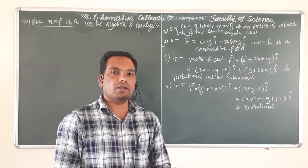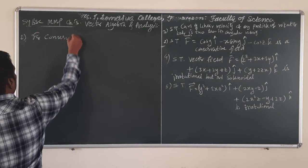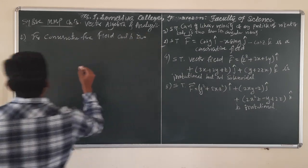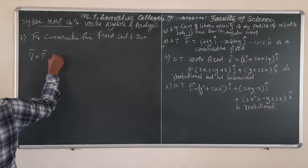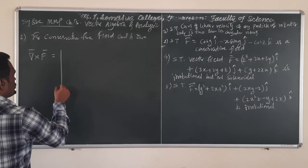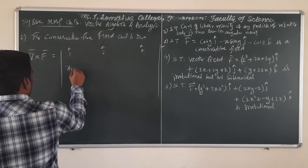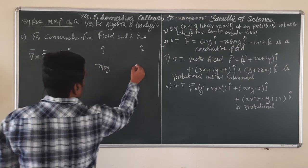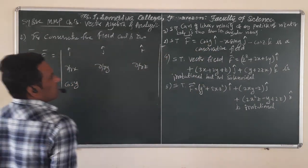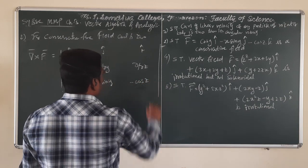Recall from the definition of conservative field: a field is known as conservative if curl of the given vector field is zero. So for problem number two, for a conservative force field, curl is zero. We have to find the curl of the given force first. If this curl becomes zero, then automatically we know that such a force field is conservative. From the definition of curl, we set up the determinant with i cap, j cap, k cap in the first row, partial derivatives in the second row, and the components cos(y), minus x·sin(y), minus cos(z) in the third row.